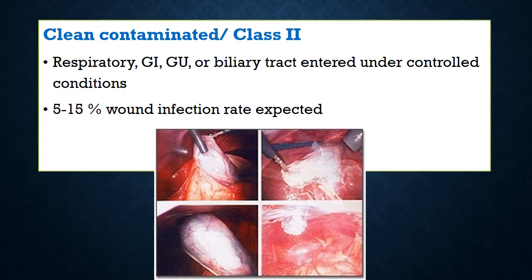Class 2 — clean contaminated wounds — are those where the respiratory tract, GI tract, genitourinary tract, or biliary tract has been opened under controlled conditions. As we know, all these tracts have commensal bacteria and can occasionally harbor resistant organisms. Whenever they are opened, even under controlled conditions, the risk of infection increases to an expected rate of 5 to 15 percent.